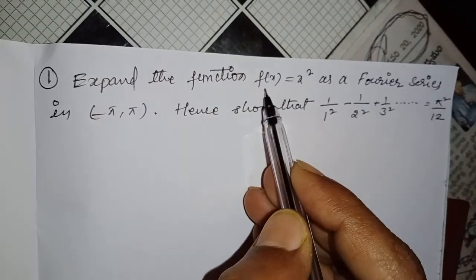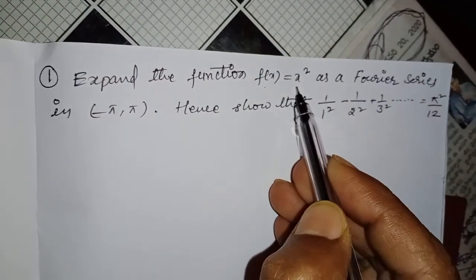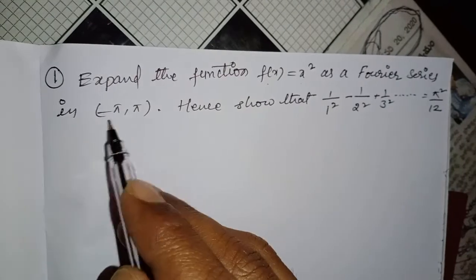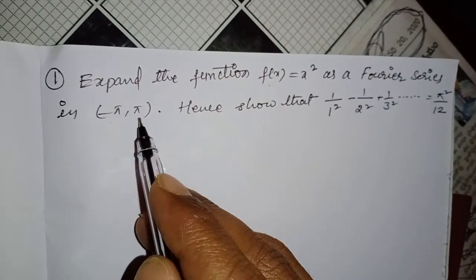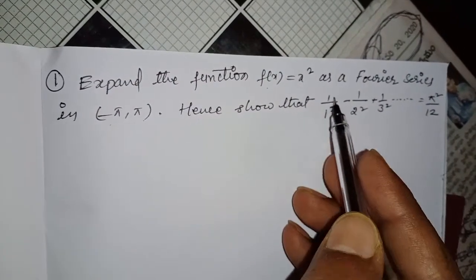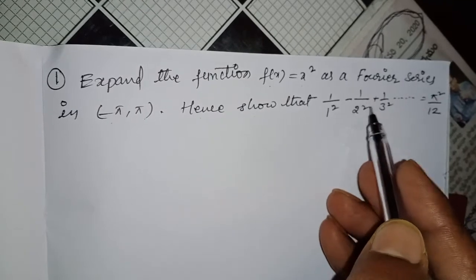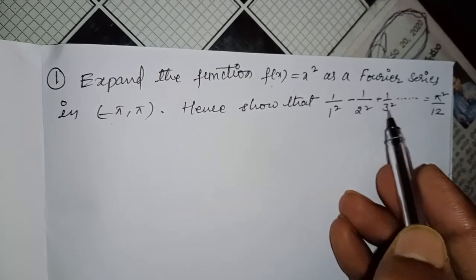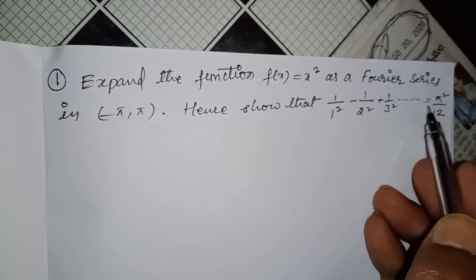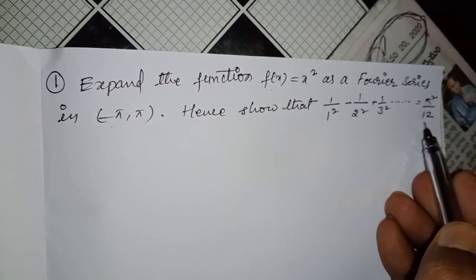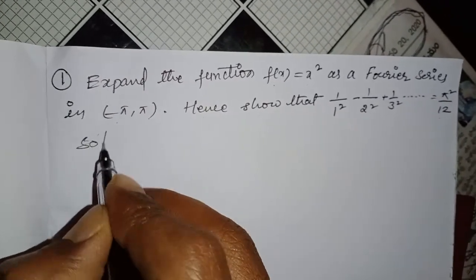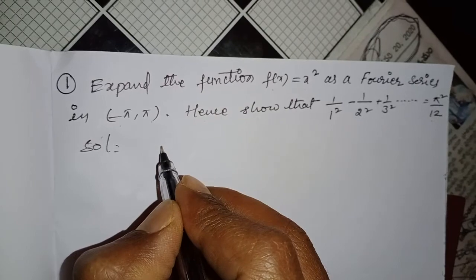Expand the function f(x) = x² as a Fourier series in (-π, π). Hence, show that 1/1² - 1/2² + 1/3² - 1/4² + ... equals π²/12. Solution: first of all,